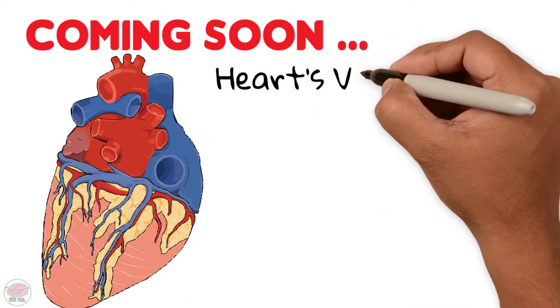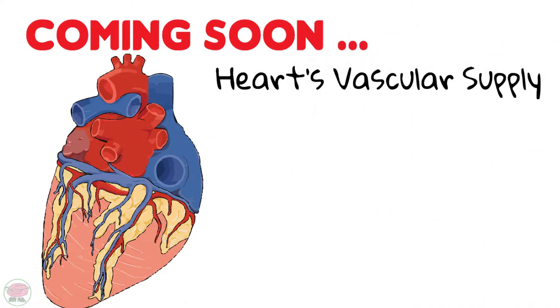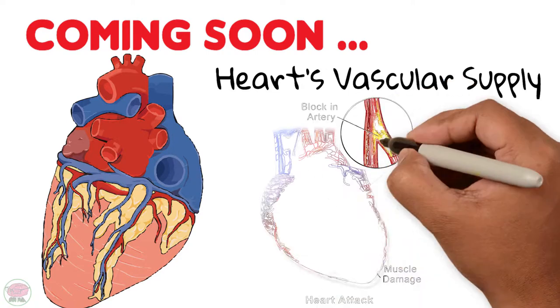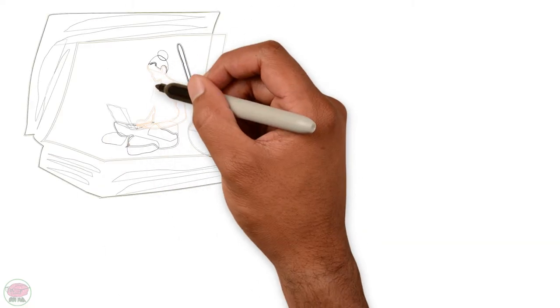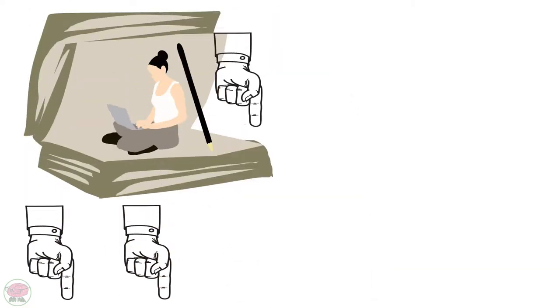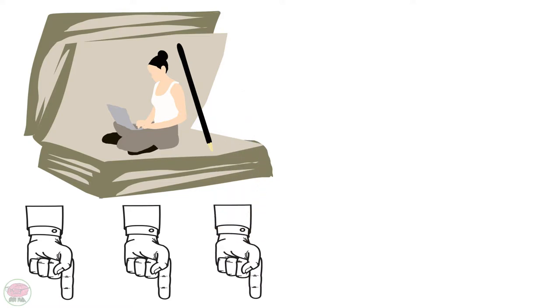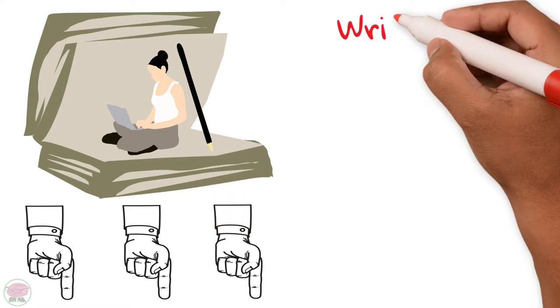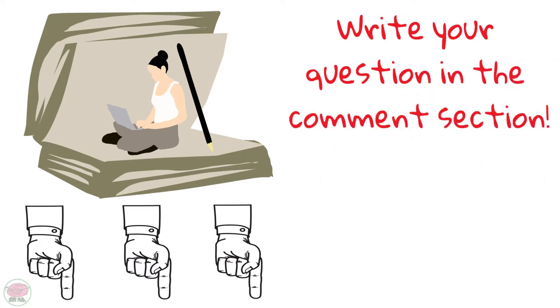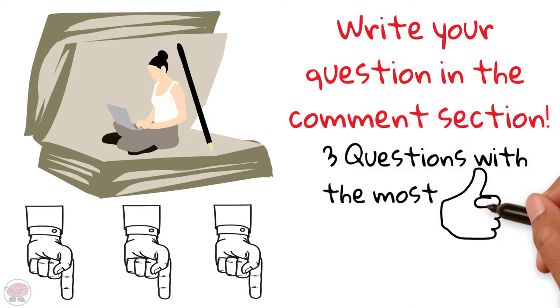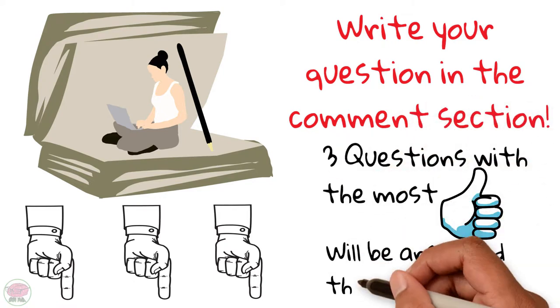And that's it for this video. The next video will cover the heart's vascular supply, which is important to understand the myocardial infarction section of this series. If you'd like to read more about the topics discussed, references will be in the description below. If you have any questions, please write them in the comment section — but first make sure your question hasn't been asked already. If it has, give it a like, and the three questions with the most likes will be answered in the next video.